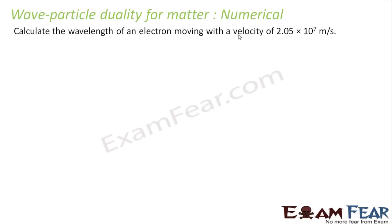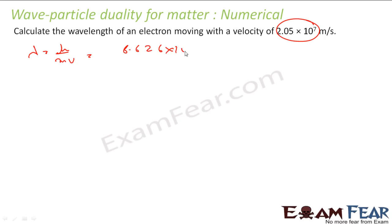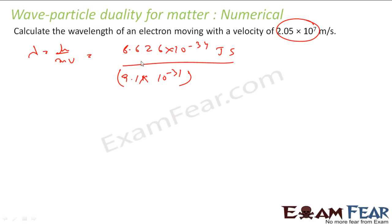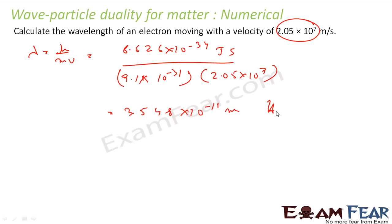We have to calculate the wavelength of an electron moving with a given velocity. λ = h/mv. h = 6.626×10⁻³⁴ J·s, mass of electron = 9.1×10⁻³¹ kg, velocity = 2.05×10⁷ m/s. Solving this you get λ = 3.548×10⁻¹¹ m, and that is the wavelength.